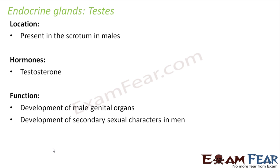Secondary sexual characters in men include development of beard, mustache, chest hair, pubic hair, enlargement of the penis, and secretion at puberty. When guys reach a certain age and all these secondary sexual characters start appearing, we say that person is entering puberty. All of these things are controlled by testosterone.